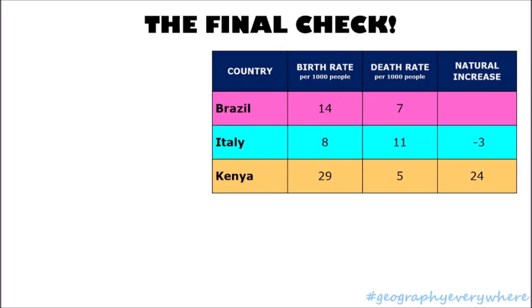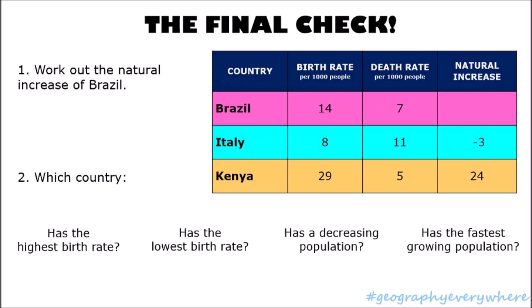Final check. This is a table showing three countries and their birth rate, death rate, and natural increase. First, you have to work out the natural increase of Brazil. Then, match the statements to the different countries. Pause the video and allow yourself two minutes to work them out. When you're done, press play and check your answers.